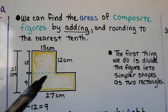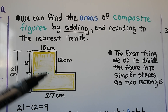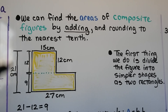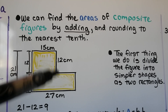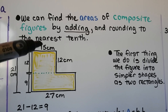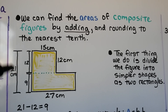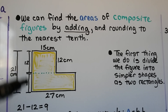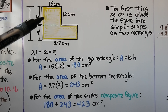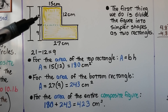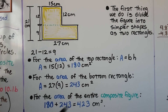We have this yellow shape and the first thing we do is divide the figure into simpler shapes — two rectangles. This side is 21 centimeters, this side is 12 centimeters, the base is 27 centimeters, and the top is 15. We can find the 9 centimeter length because if we know this is 12, we subtract it from the 21 and get 9. For the top rectangle, area equals base times height: 15 times 12 gives us 180 cm². For the bottom rectangle, 27 times 9 gives us 243 cm². Adding 180 plus 243 gives us 423 cm² for the entire composite figure.